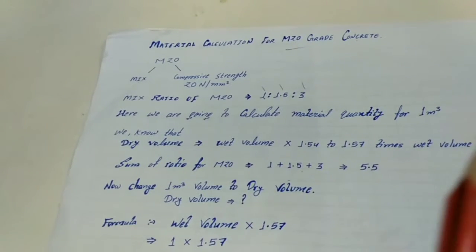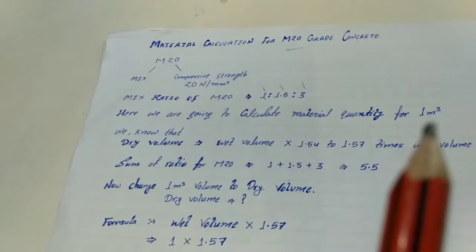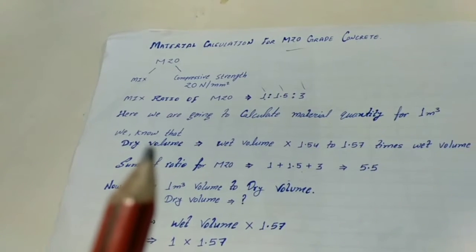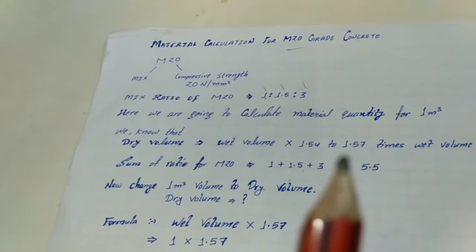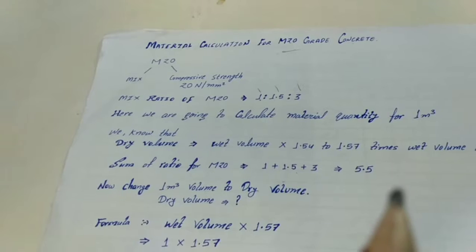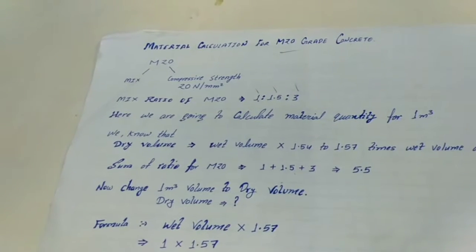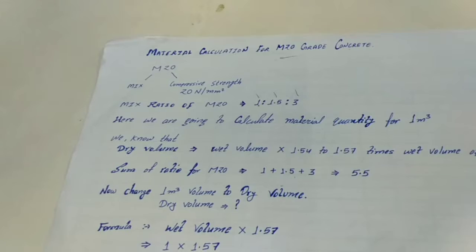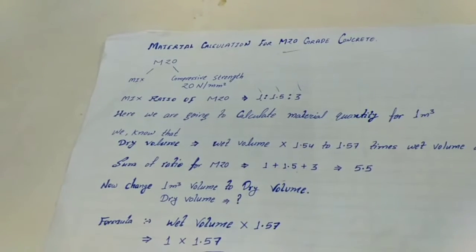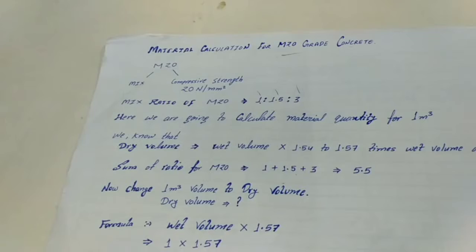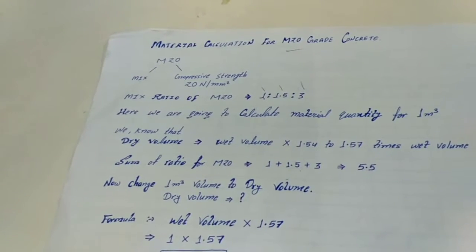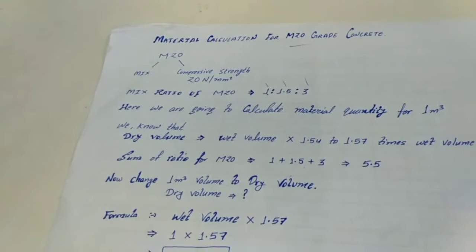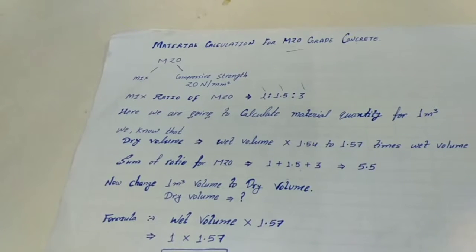This 1 cubic metre is wet volume, and we need to find the dry volume of concrete. Dry volume equals wet volume multiplied by 1.54 to 1.57 times. We take this factor because in the dry state the concrete will cover more area, but after mixing water the material will sink and the volume will reduce.